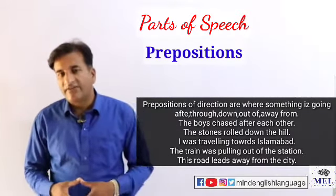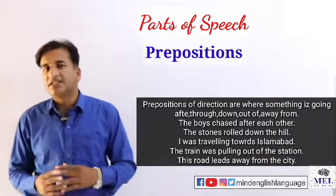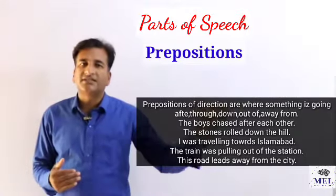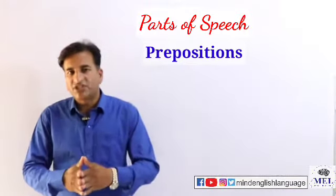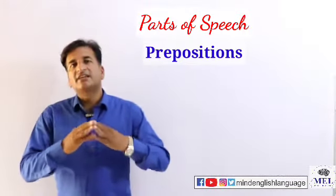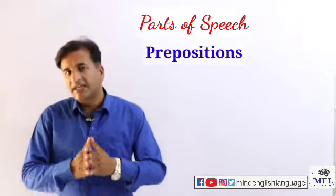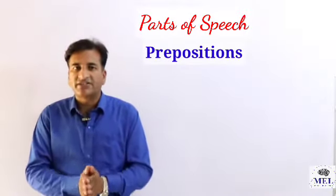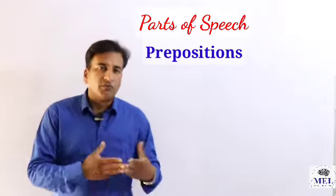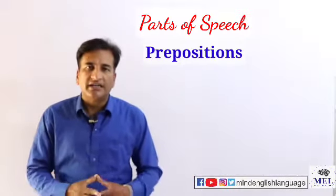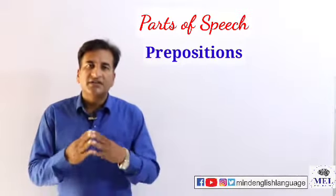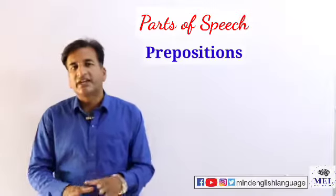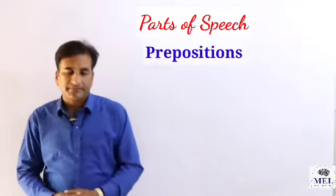'This road leads away from the city' — یہ road شہر سے باہر جاتی ہے۔ یہ تھی prepositions and their examples۔ امید ہے آپ کو سمجھ آ گئی ہو گی۔ Please do consider subscribing to our channel for more English videos — we will help you improve English in a simple and easy way.